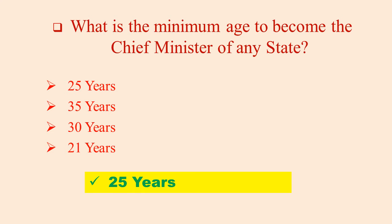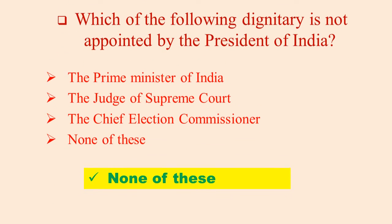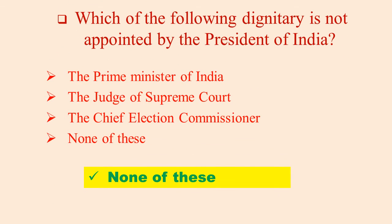What is the minimum age to become the Chief Minister of any state? 25 years. Which of the following dignitaries is not appointed by the President of India? The Prime Minister of India, the Judge of the Supreme Court, the Chief Election Commissioner.